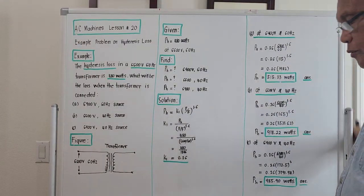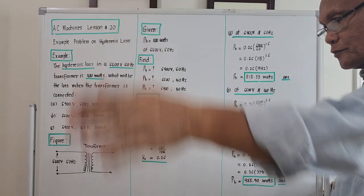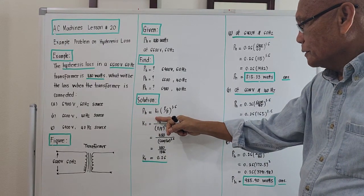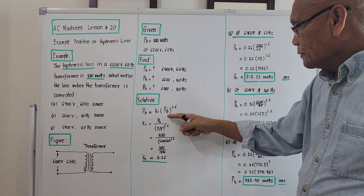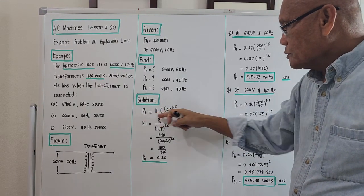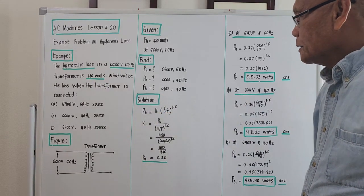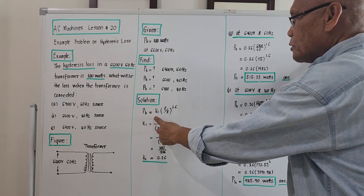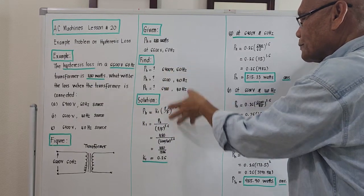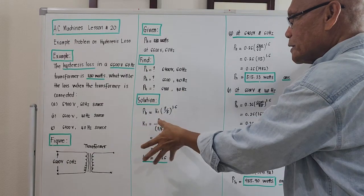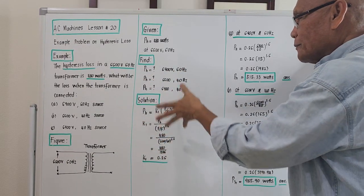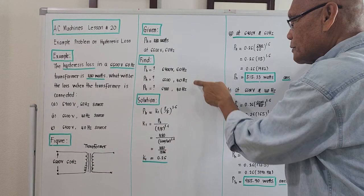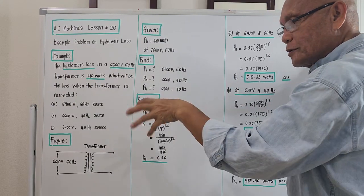To bring out the solution, we will be using the derived equation from previous lessons. For hysteresis loss, it is actually a certain constant k1 times the ratio E over f — where f is frequency — raised to 1.6. This is an exponential equation. The key to the solution is that we must compute for k1 first. When we go to the variations at different voltages and frequencies, we know the value of k1 because we are talking of the same transformer.